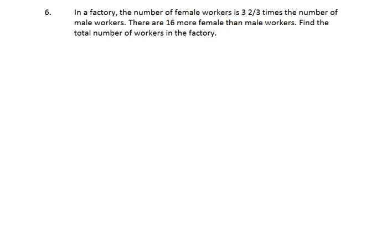Number six. In a factory, the number of female workers is three and two-thirds the number of male workers. If there are 16 more female workers than male workers, find the total number of workers in the factory.